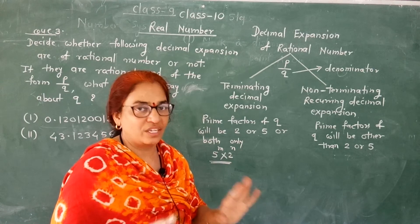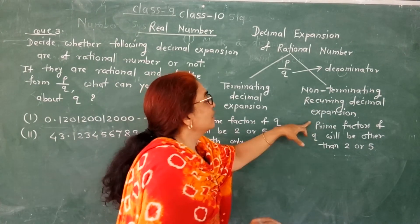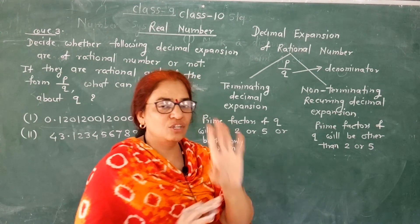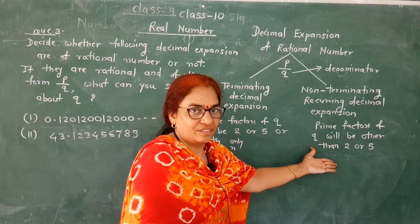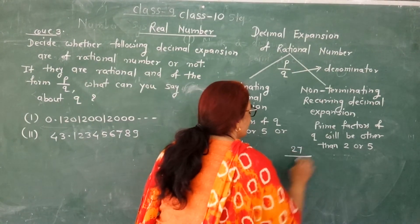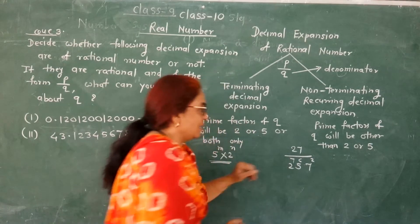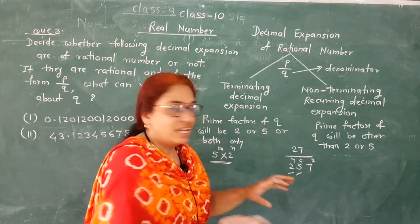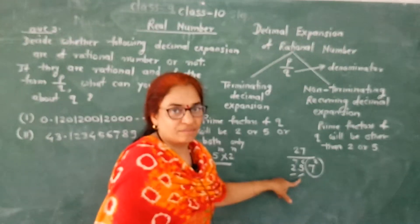Non-terminating recurring decimal expansion - when will we use this? When the denominator's prime factors are other than 2 or 5. If there is 2 or 5, there must be another factor also.